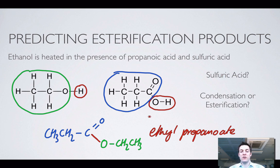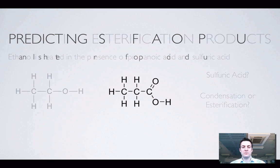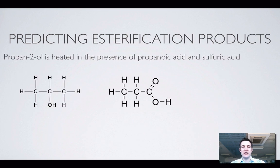So that's how to put together an alcohol and an acid to make an ester. Remember that we often use an acid catalyst but we don't need to include it in our equation, and also very importantly we're making water when this reaction happens — that's why it's called a condensation reaction.